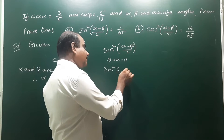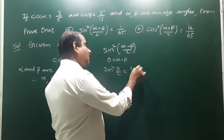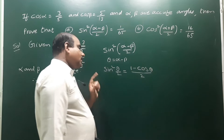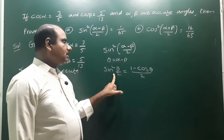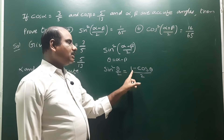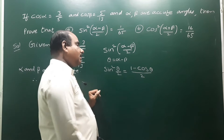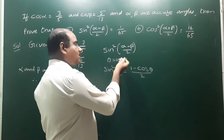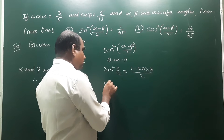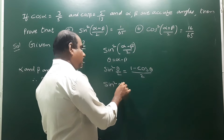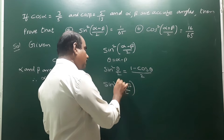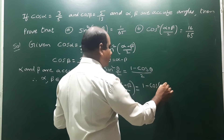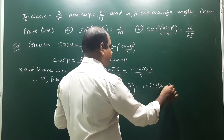We will use the half-angle formula. The formula is: sin²(θ/2) = (1 − cos θ)/2. So for sin²((α−β)/2), we substitute θ with α−β, giving us sin²((α−β)/2) = (1 − cos(α−β))/2.